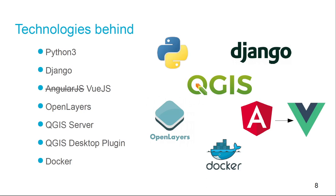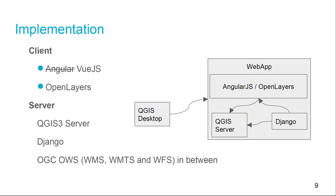The original application was written using AngularJS, but currently we are more than 90% of the way through migrating it to Vue.js. On the client, there is Vue and OpenLayers. On the server, there is QGIS 3 server and Django. We try to rely as heavily as possible on OGC and OWS services.